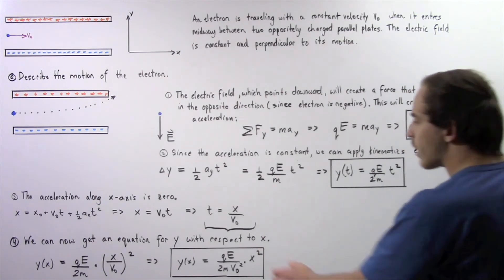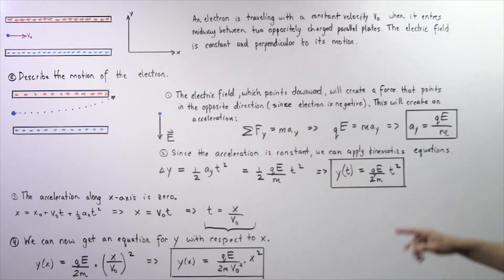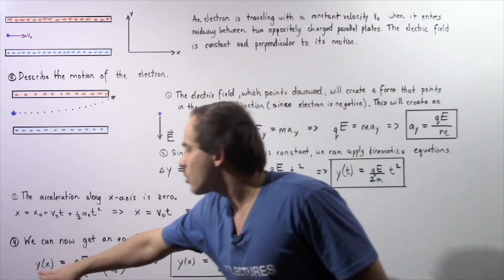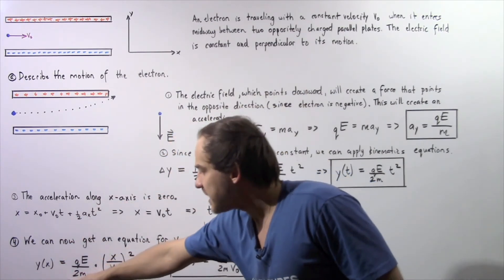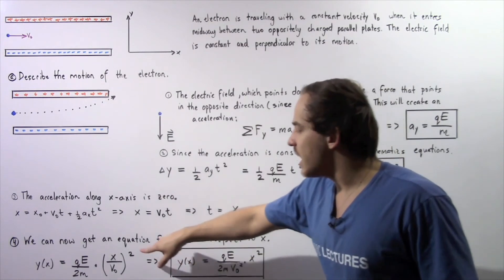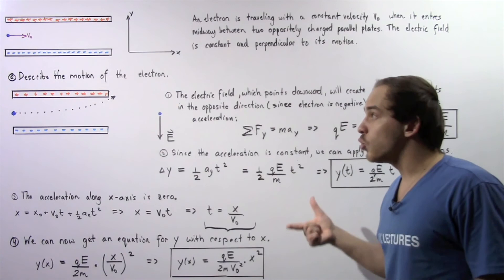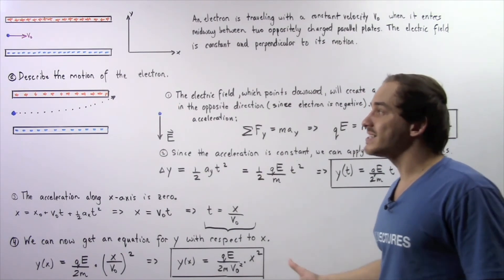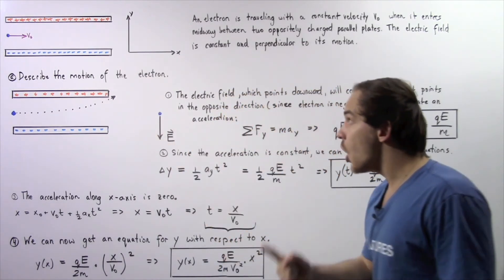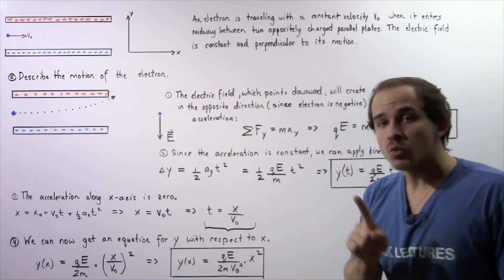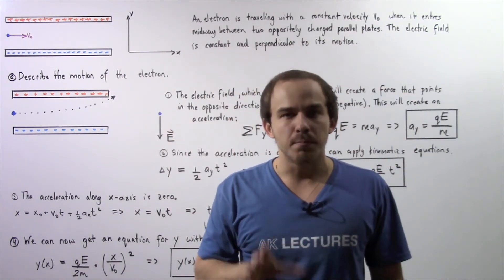Now we take our time expression and replace T with x divided by V0. Our y with respect to x is equal to Q multiplied by E divided by 2M, multiplied by the square of x divided by V0. This equation represents the motion of our electron within this setup. Notice that y is proportional to x squared, which means this pathway will be parabolic.